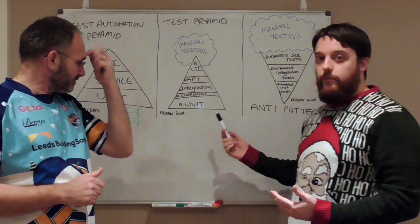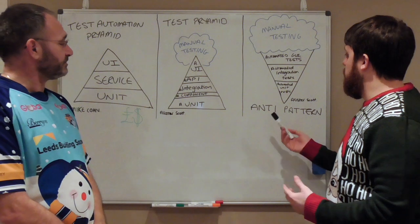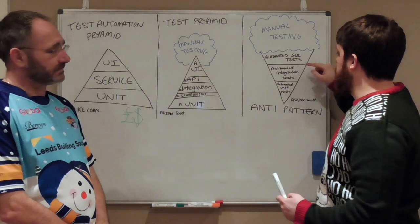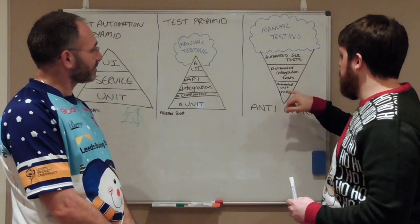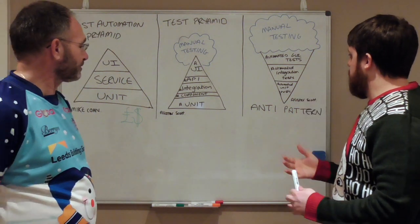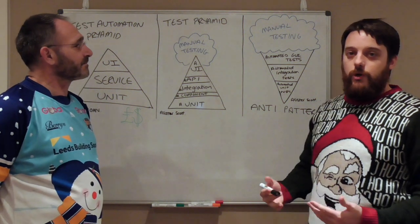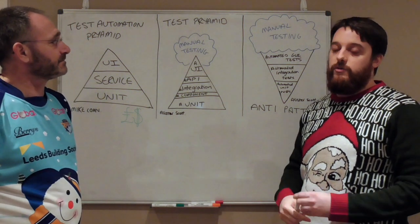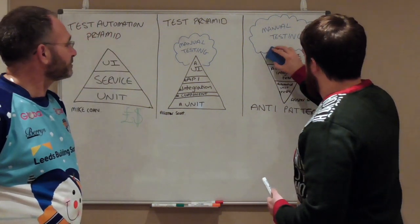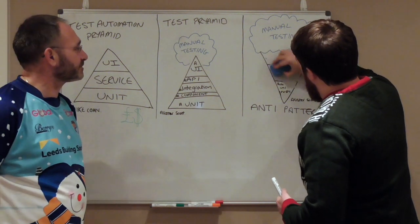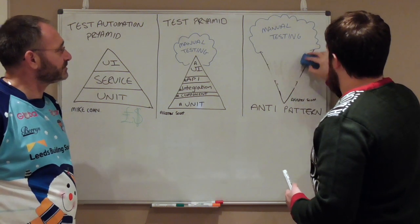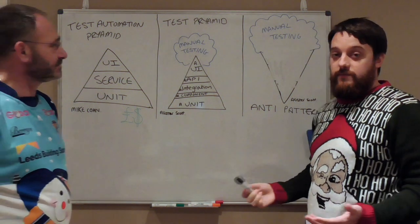Then we had even more elaborations on the model. Alastair Scott came up with what he called the anti-pattern to this — basically the pyramid inverted. You have a lot of UI automation, a lot of integration, and very few units, with a big manual testing cloud at the top. This highlighted a potential adaptation on the model. I took the model, got rid of the various layers, and tried to view it as an actual ice cream cone — known as the ice cream anti-pattern.